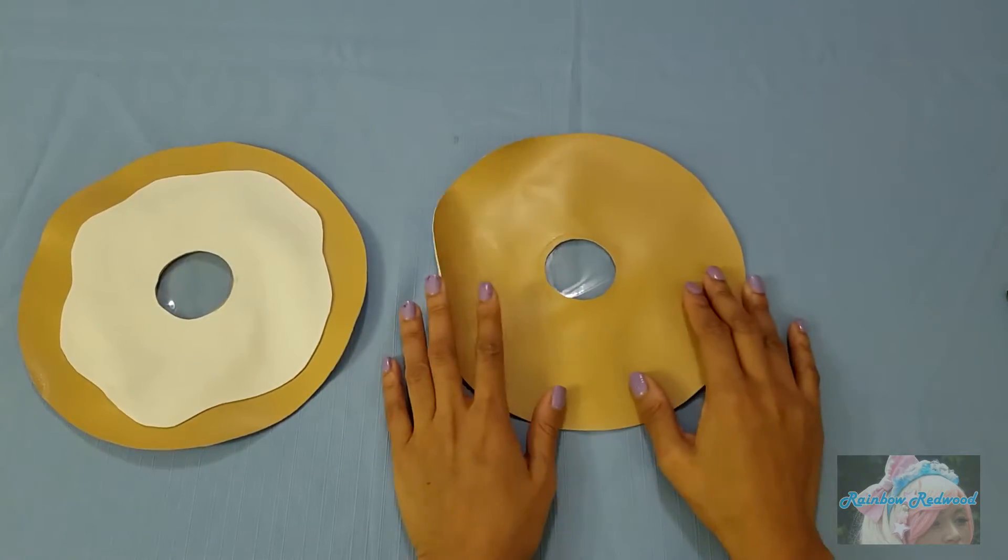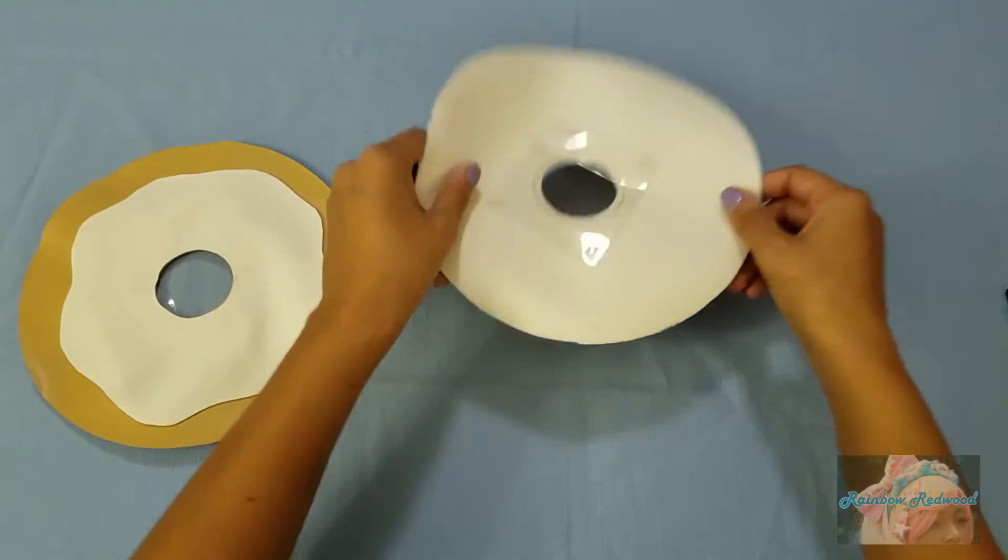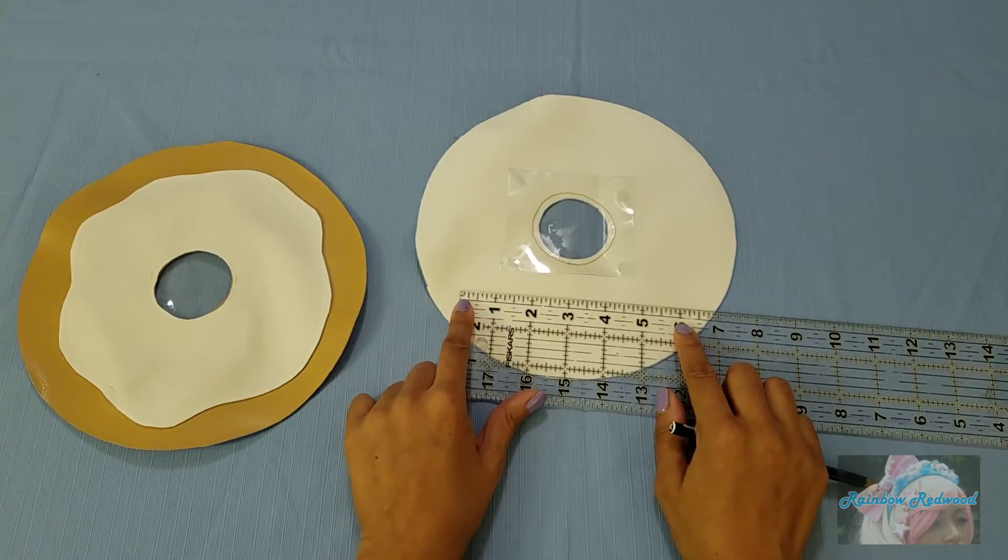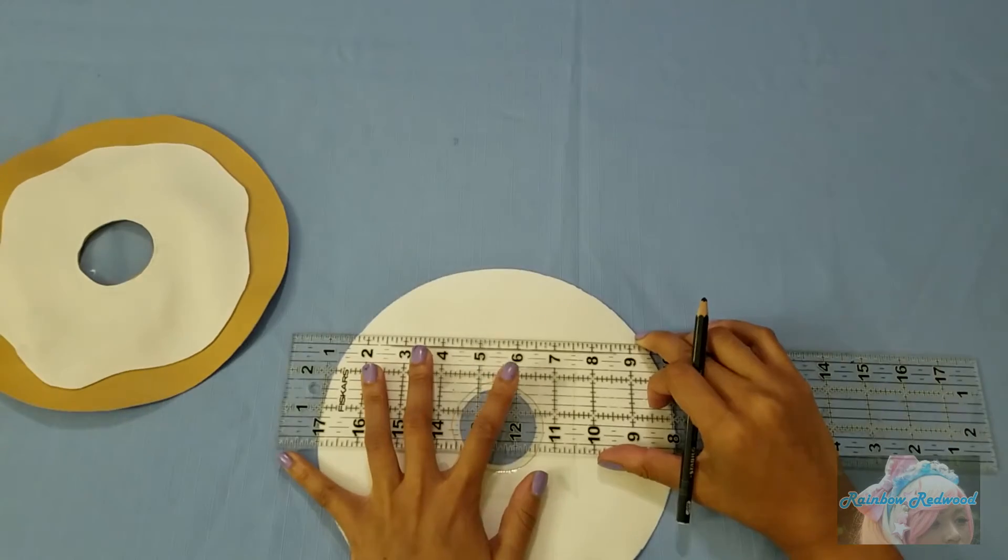Now taking the back portion of your donut, you're going to flip that over and then decide where you would like your zipper and then mark six inches. After you do that initial mark, you're going to make another mark that is one fourth inch away from that.